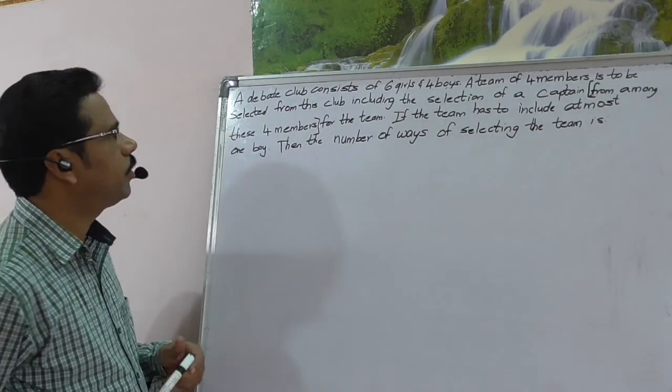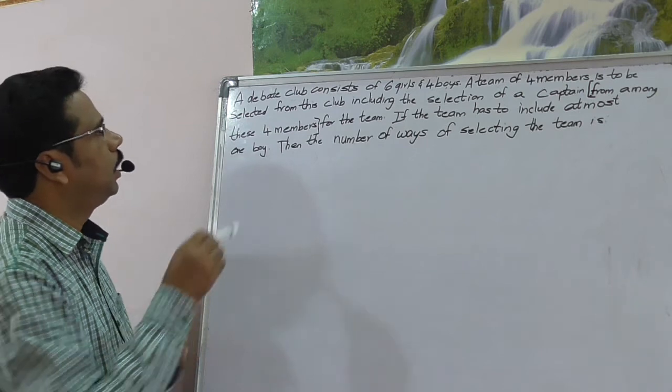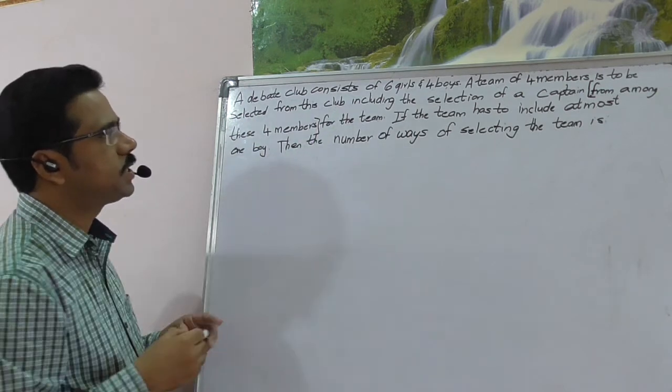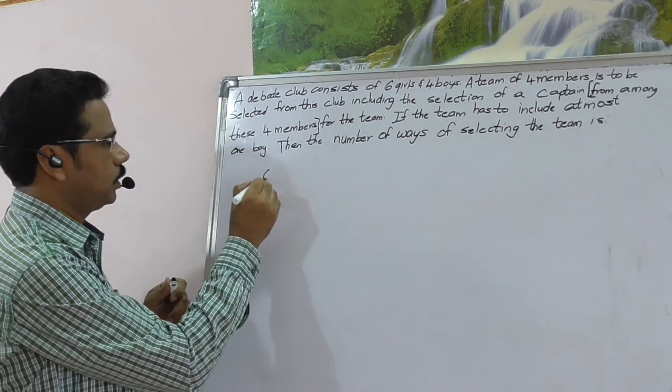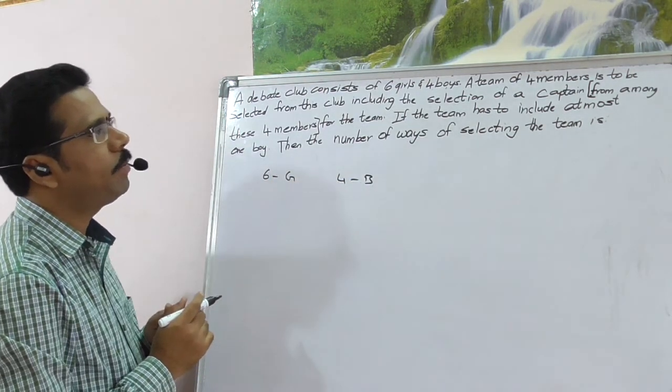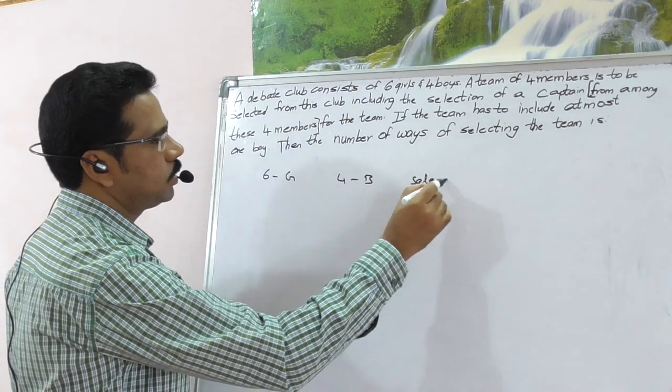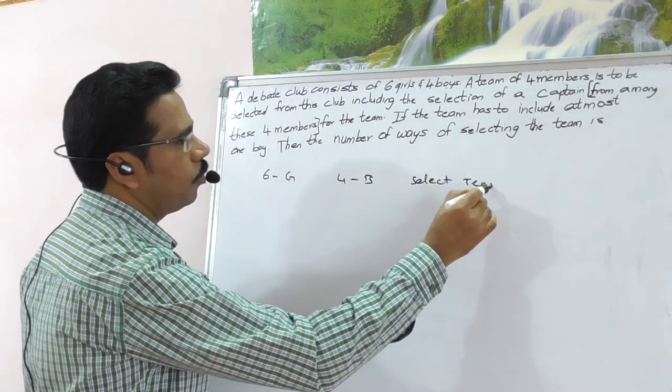Hi, this question from JEE Advanced 2016, paper 1. An event club consists of 6 girls and 4 boys. A team of 4 members is to be selected. You have to select team of 4 members.